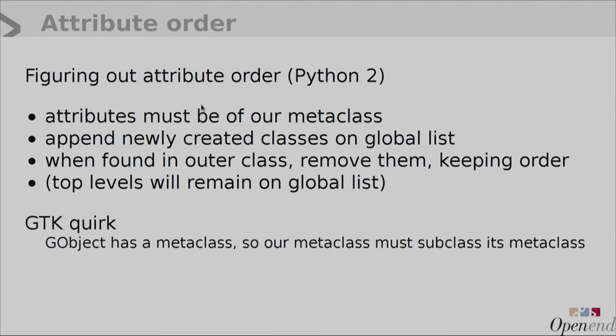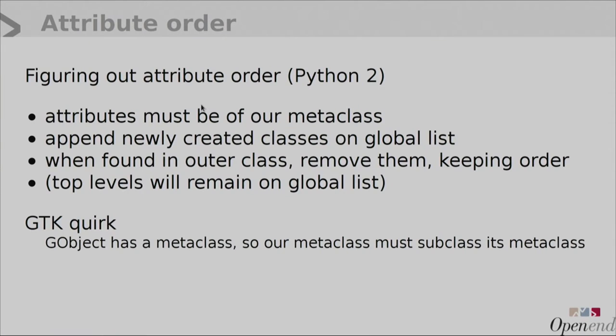The first problem we ran into was that in a standard class you just get the dict with all the attributes in some random order. When you're declaring a GUI, you obviously want to be sure that whatever you put on top appears in the first spot in your window — it shouldn't randomly appear somewhere in the middle. You want the order well defined. Since we were using Python 2, we couldn't use `__prepare__`. This was really the hardest bit of making this work — figuring out how to do it.